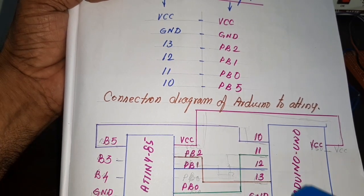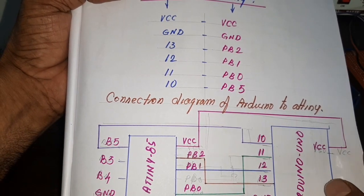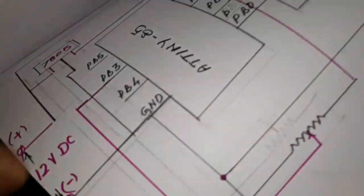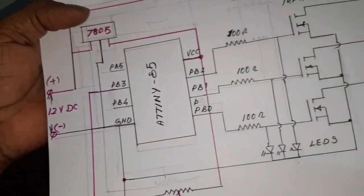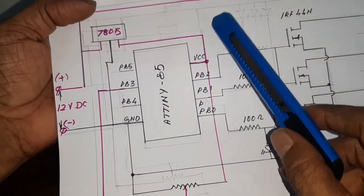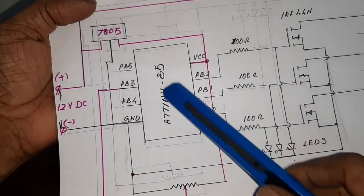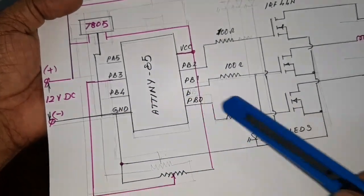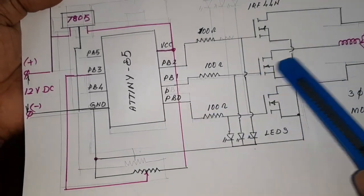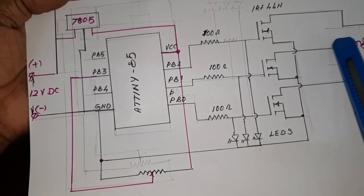So, after completing the programming, here, this is the 3 phase BLDC generator using ATtiny 85. And here, this is the MOSFET driver and here, this is the motor.